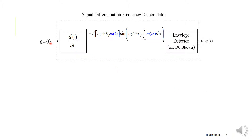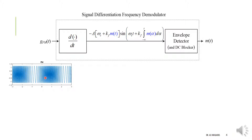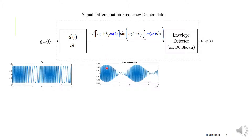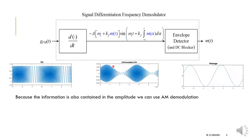Let's see this in more detail. We take our FM signal and differentiate it. The original signal has ideally constant amplitude. Once we differentiate, it becomes both FM and AM: high frequency corresponds to high amplitude, and low frequency corresponds to low amplitude. The information is now in both amplitude and frequency. We can then use a normal envelope detector with DC blocking and other details to recover our message, which is contained on the envelope.